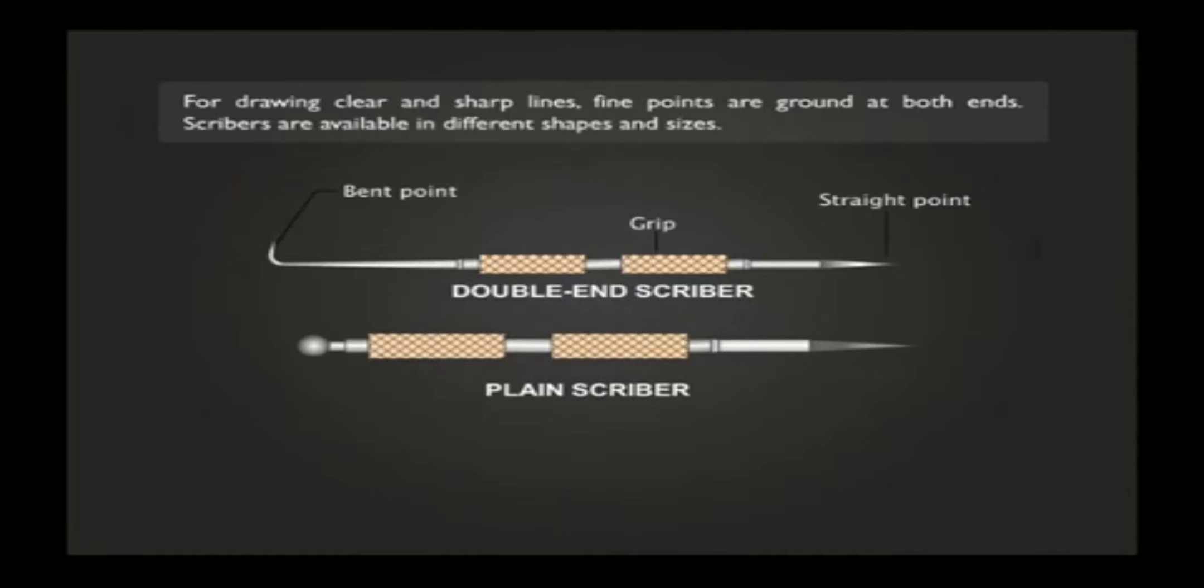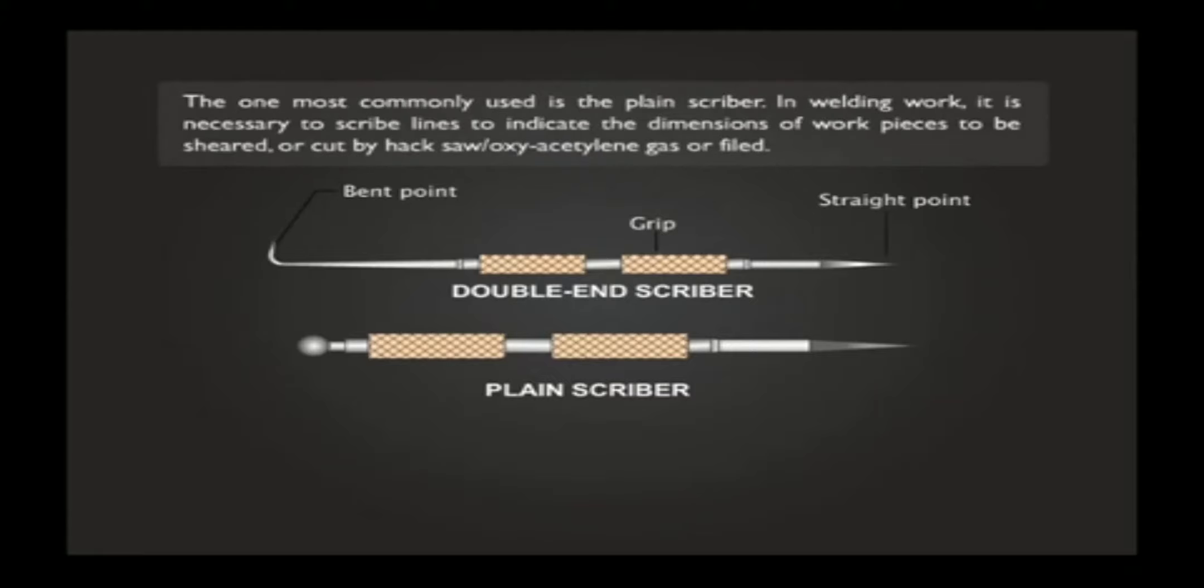Scribers are available in different shapes and sizes. The one most commonly used is the plain scriber. In welding work, it is necessary to scribe lines to indicate the dimensions of work pieces to be sheared or cut by hacksaw, oxyacetylene gas, or filed.